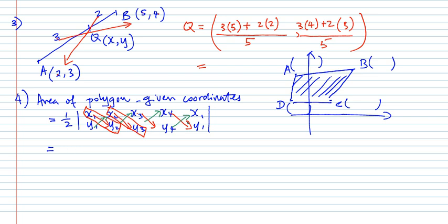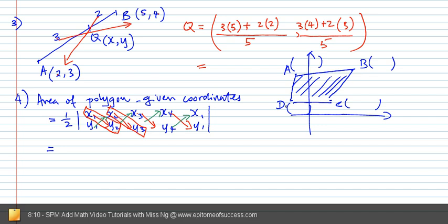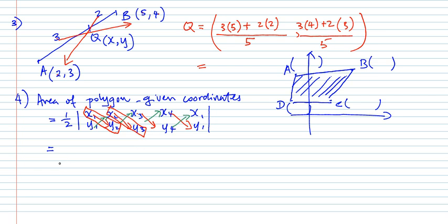And note, it is a modulus. Why is it a modulus? Because area cannot be negative. So you may end up with a negative. The reason is because you have points that are in the negative. Could be negative X, negative Y, right? So you will end up with a negative, but you have to modulus, to modulus it, make it a positive. The answer would be in unit square. This is the formula for area.